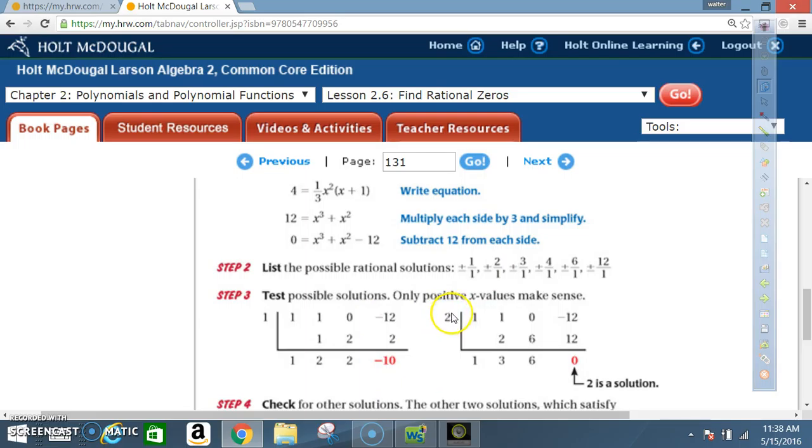So now we try out 2. List the exact same setup for our equation. Bring that 1 down. 2 times 1 is 2. 1 plus 2 is 3. 2 times 3 is 6. 0 plus 6 is 6. 2 times 6 is 12. 12 minus 12 is 0. So 2 is a solution.